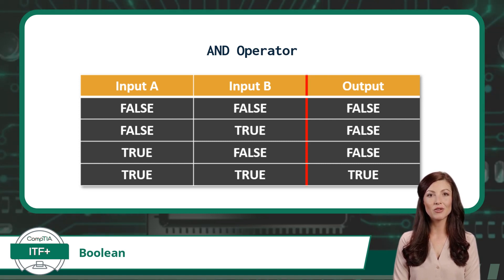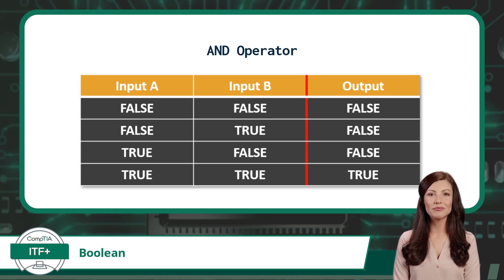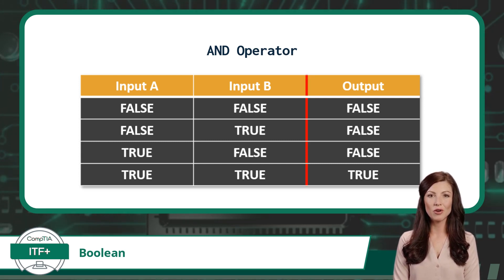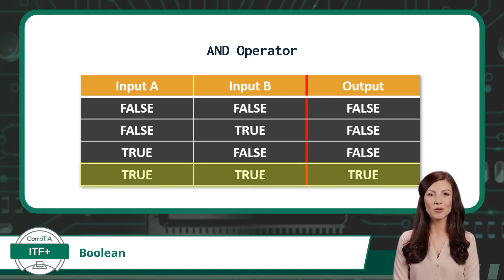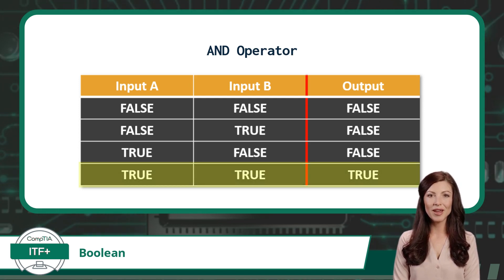The second conditional statement will be: my eyes are brown. Well, that is also a true statement, so we will use true for input B. Using the AND operator table, we can now see our resulting Boolean value for this example would be true.